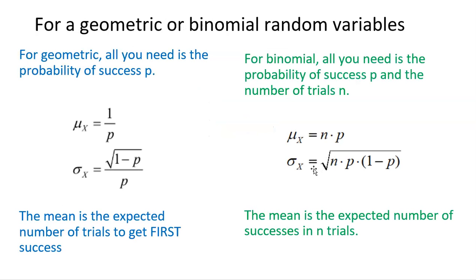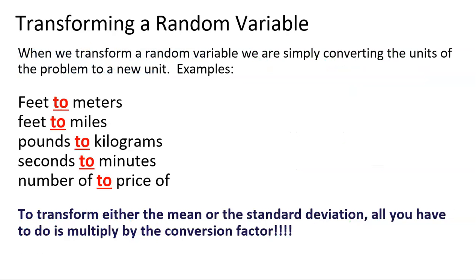Geometric and binomial random variables have their own set of formulas to find the mean and standard deviation. I'm flying through these because I have another video for calculating them. What I want to do in this video is focus on transforming a random variable — simply converting the units of the problem to a new unit. Examples include feet to meters, pounds to kilograms, seconds to minutes, or number of items to price of items.